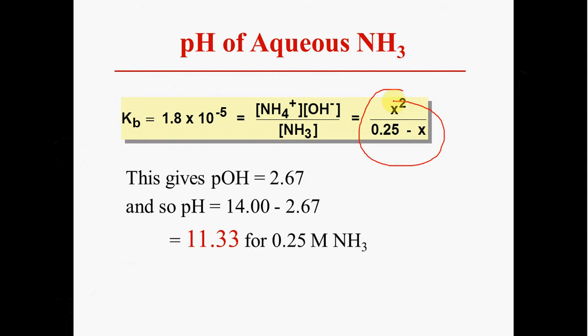Once you're finished, you've got x squared over 0.25 minus x. Throw out that x is going to give you a pOH of 2.67 and a pH of 11.33, which would be typical for this concentration of an ammonia solution.